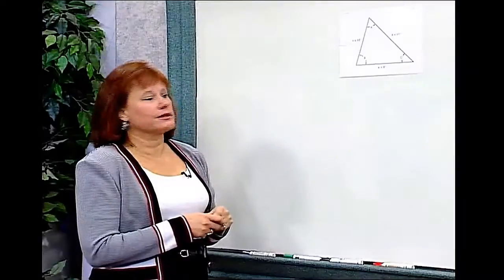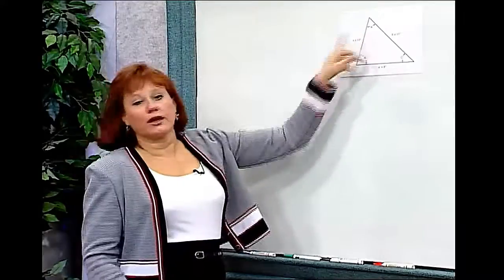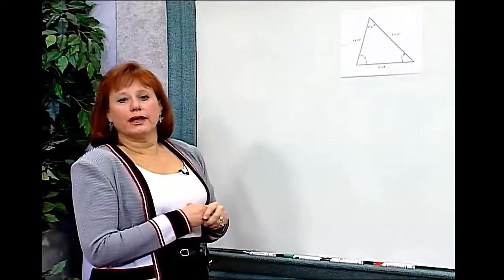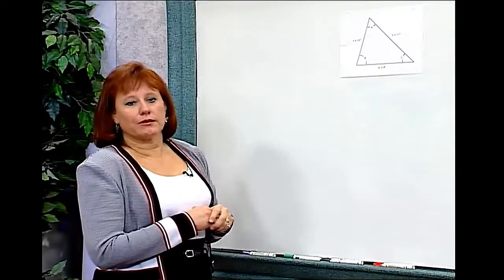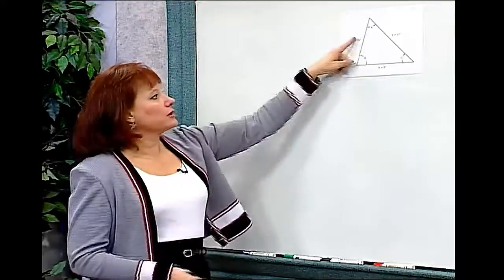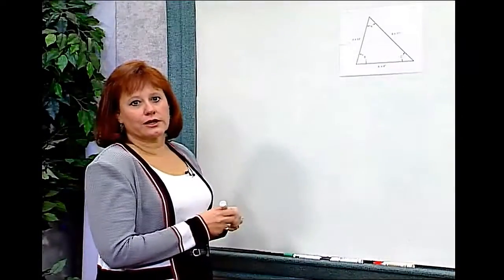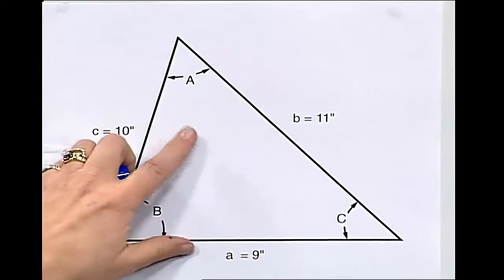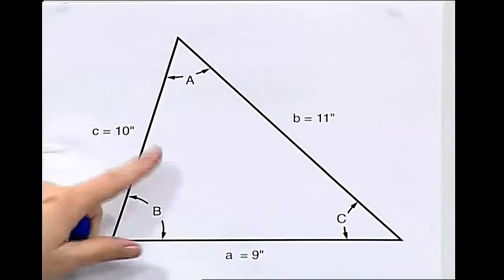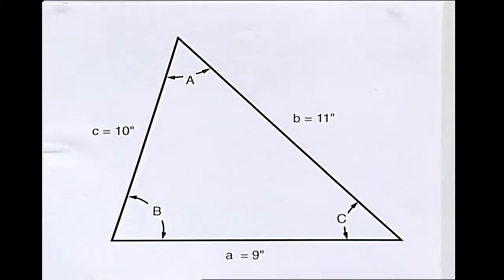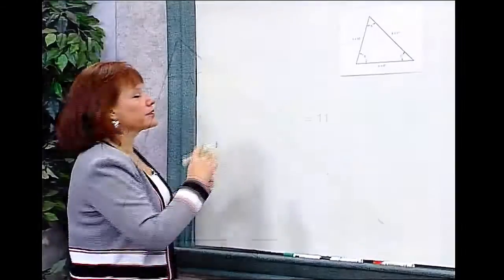What I need to do is determine how big each of the angles is. Since I don't know any of the angles, I won't be able to set up the ratio necessary to use the Law of Sines. I don't know angle A, so I can't set up a ratio between angle A and side A. Instead, I'll have to use the Law of Cosines.